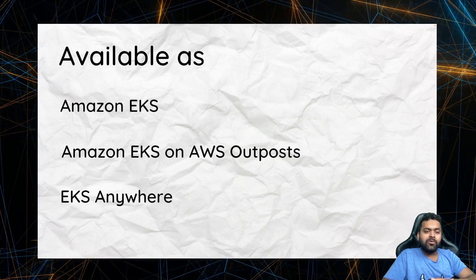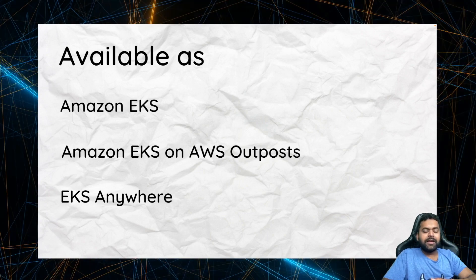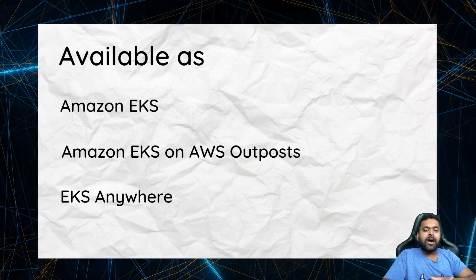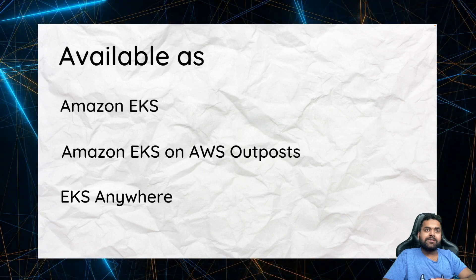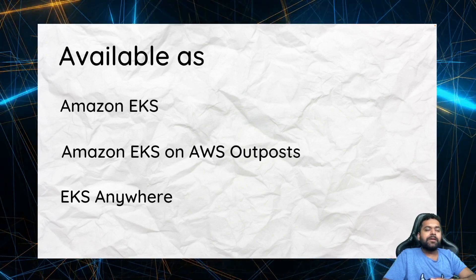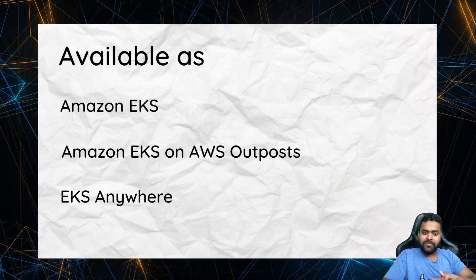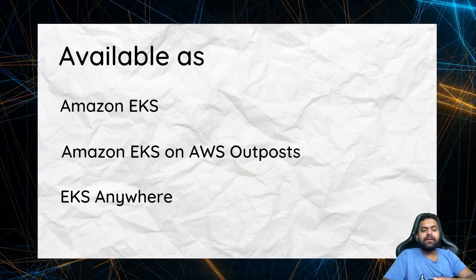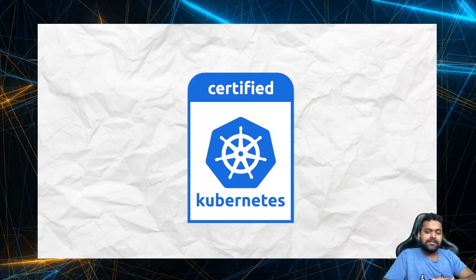I won't be able to run a demo for Outpost, but I will dedicate an episode to explaining how the architecture looks. The third one is EKS Anywhere, which means you can run EKS even on your own hardware in your own data center. The project that deploys this is open source, and I'll cover that in another episode as well. So EKS is available in three different forms.